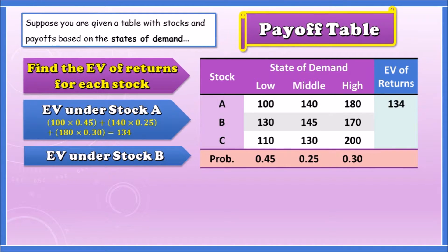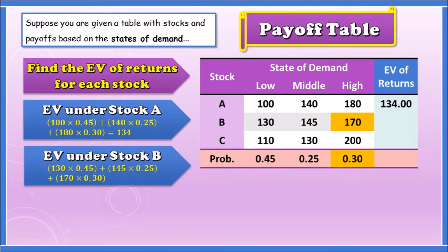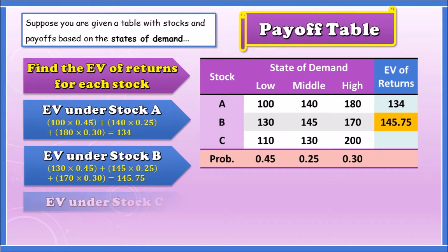Likewise, for Stock B: 130 times 0.45, plus 145 times 0.25, plus 170 times 0.30. Same procedure, and this gives us 145.75. We'll keep two decimal places to stay consistent.